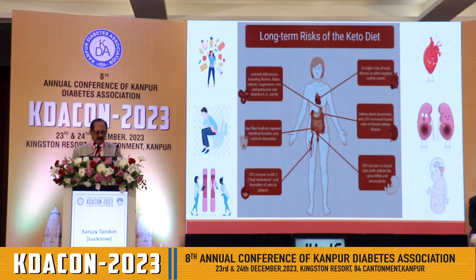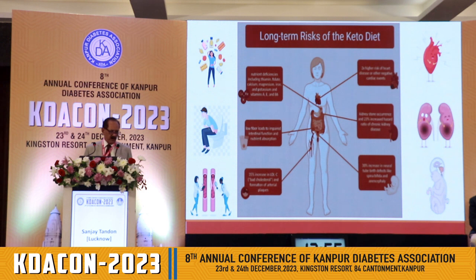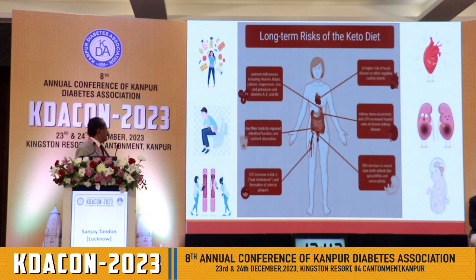Regarding the risk factors of keto diet, you may find nutrient deficiencies including thiamine, folate, calcium, and magnesium. There is a two times higher risk of heart disease reported, recently presented at ACC in March 2023. Low fiber may impair gut function and nutrient absorption. There is a 35% increase in adrenal impact, and a 30% increase in neural tube defects, as pointed out by Dr. Shilpa in the previous lecture.